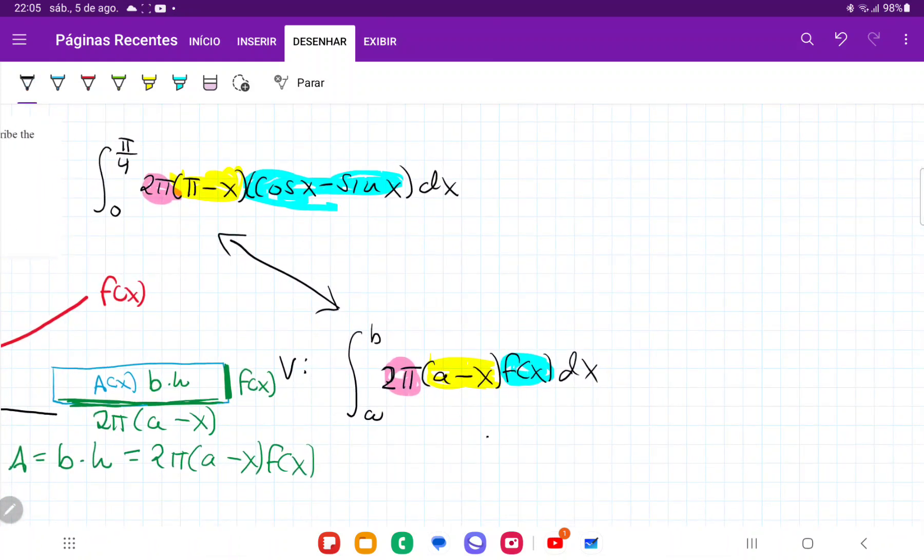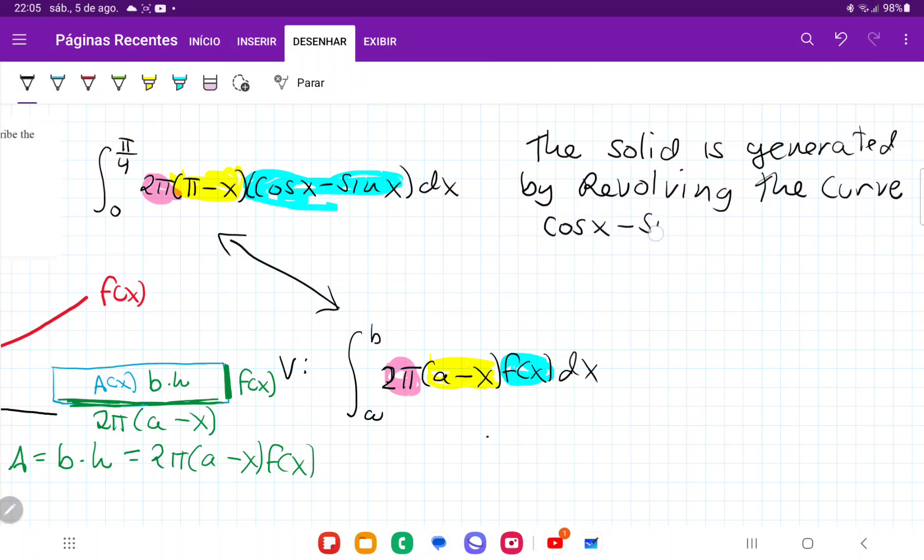So in conclusion, we can say that the solid is generated by revolving the curve cosine x minus sine x about the line x is equal to... Our a is going to match up to π. So x is equal to π.